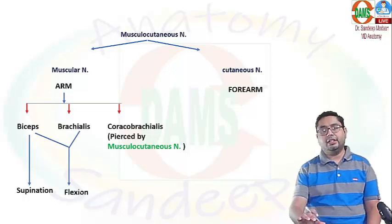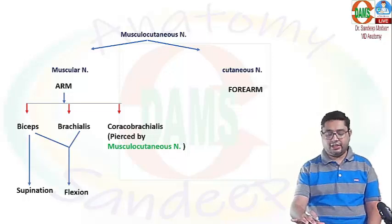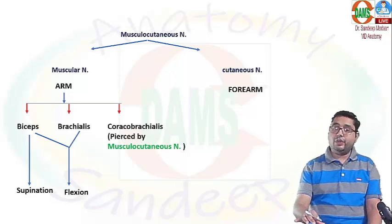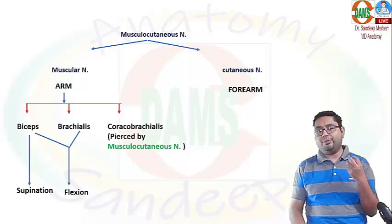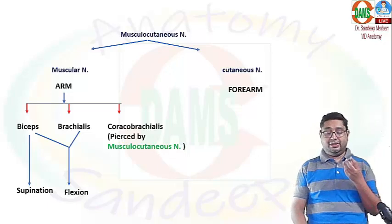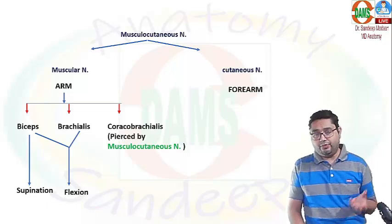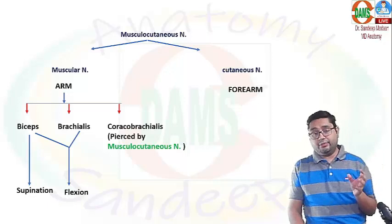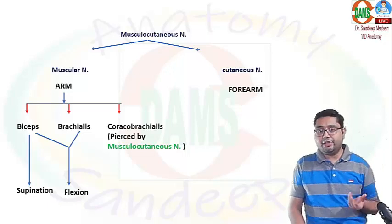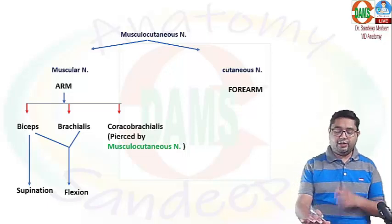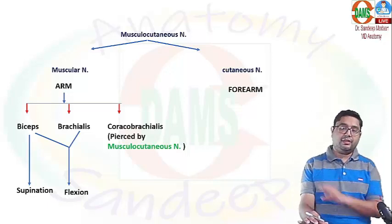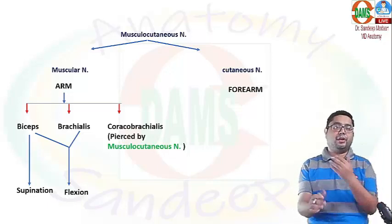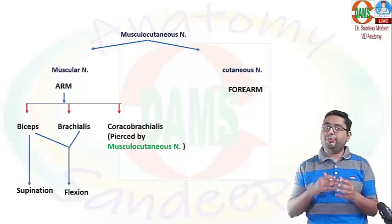Looking at their normal actions: biceps alone is a powerful supinator, and biceps along with brachialis performs flexion of the forearm at the elbow joint. So in case of injury to the musculocutaneous nerve, the expected motor loss is inability to flex the forearm, and a greater part of supination will also be affected.